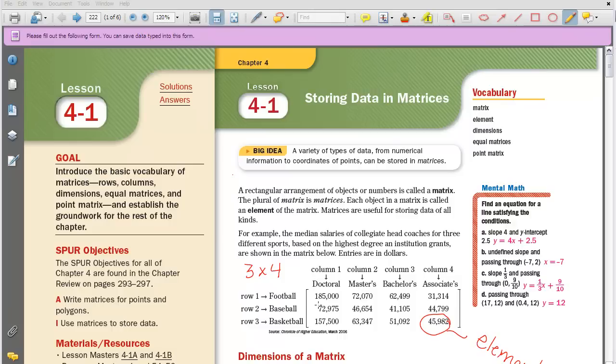A matrix is made up of objects, and we call that an element. So in this matrix that you see here, all these elements represent dollar amounts. And specifically here, we're comparing median salaries of collegiate head coaches for three different sports. And then based on the highest degree the institution grants, they're shown below in dollars. So each of these elements is a dollar amount, and it's a way to basically organize our information.